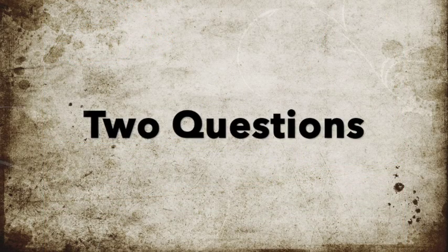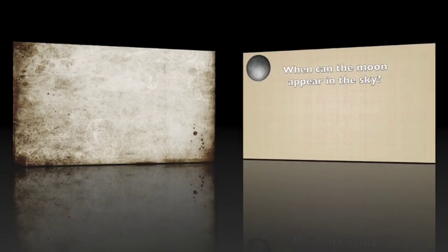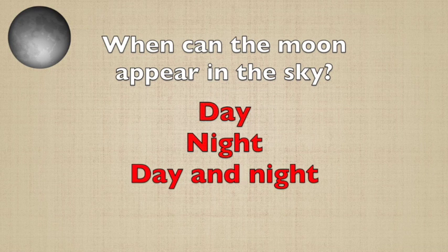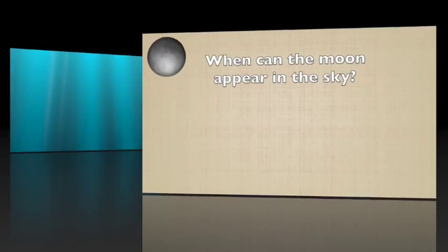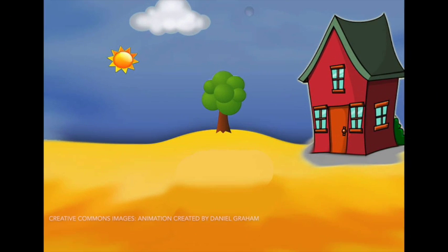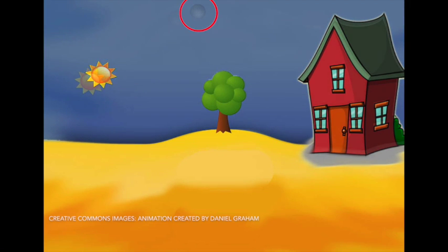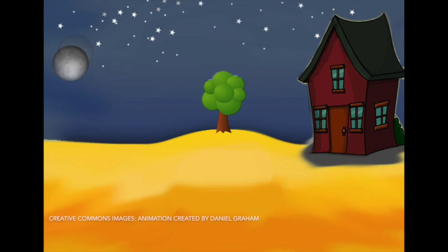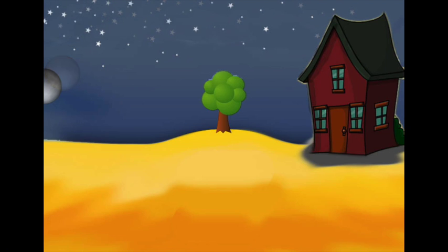I have two further questions for you, and the first one is: when can the moon appear in the sky — in the day, night, or day and night? The answer is actually day and night. Some people think that the moon only comes out at night when the sun is gone, but that's not true. Even though it's hard to see at times because of the brightness of the sun or because of cloud cover, unlike the sun, the moon can appear during both the day and night time.